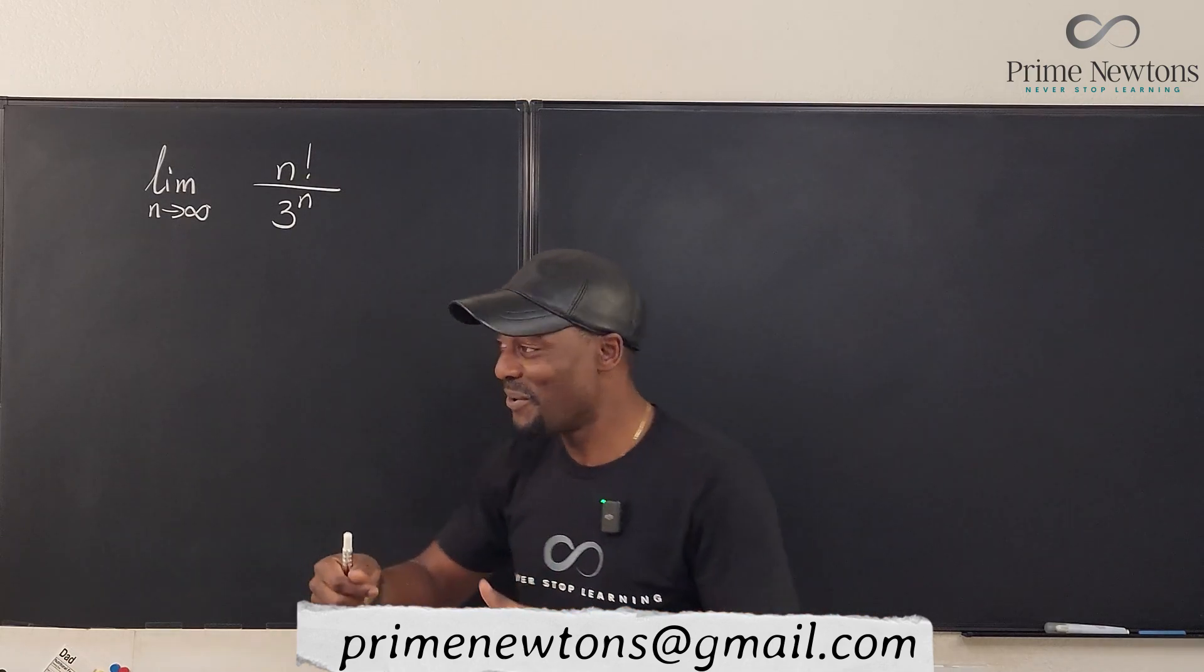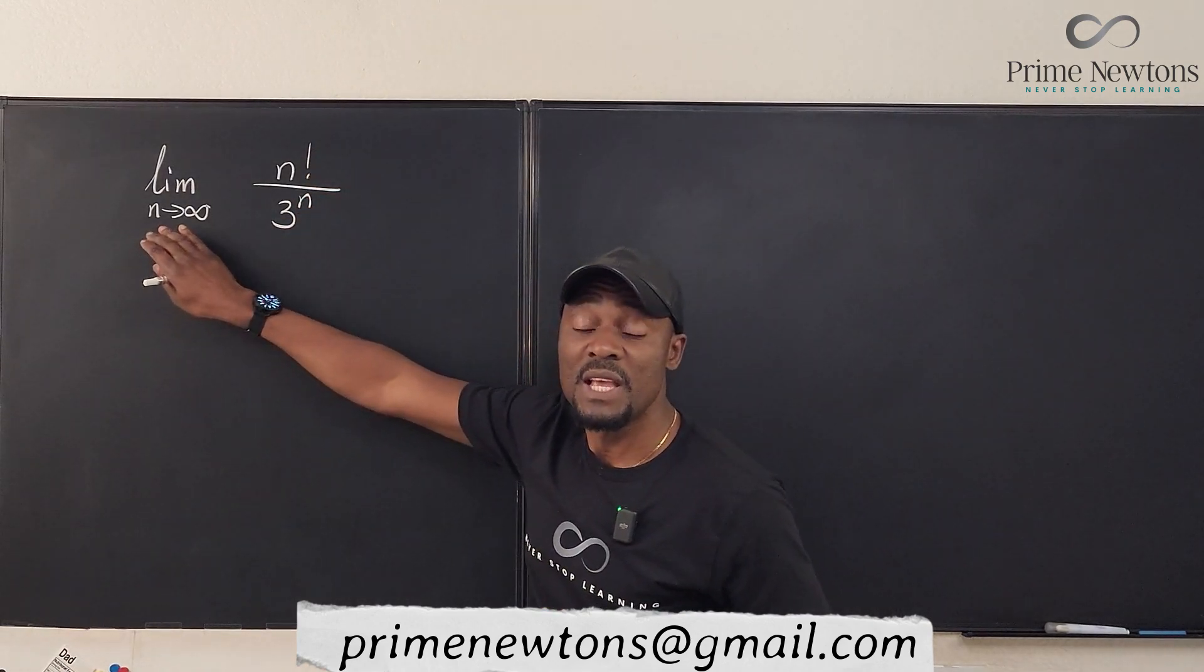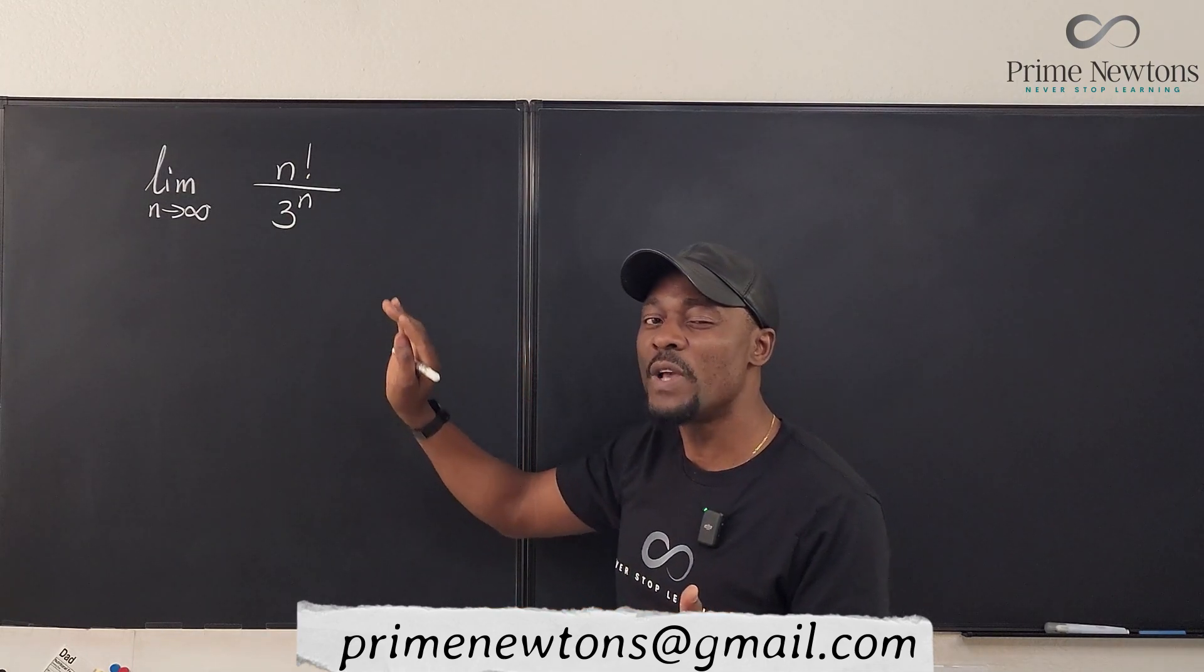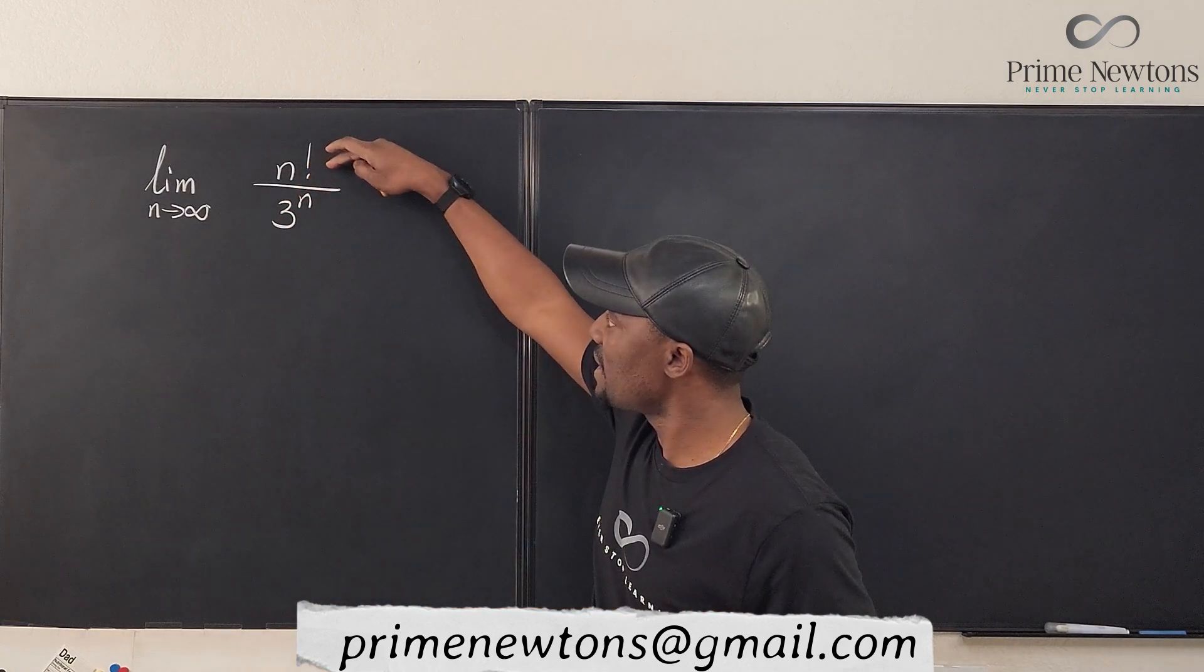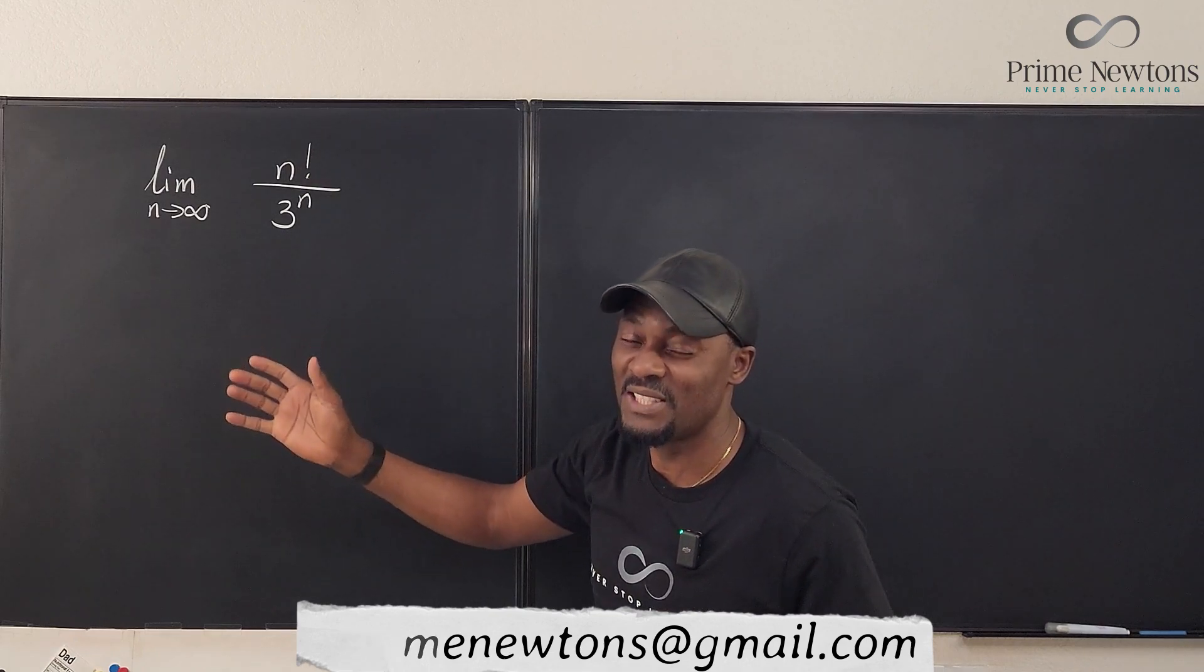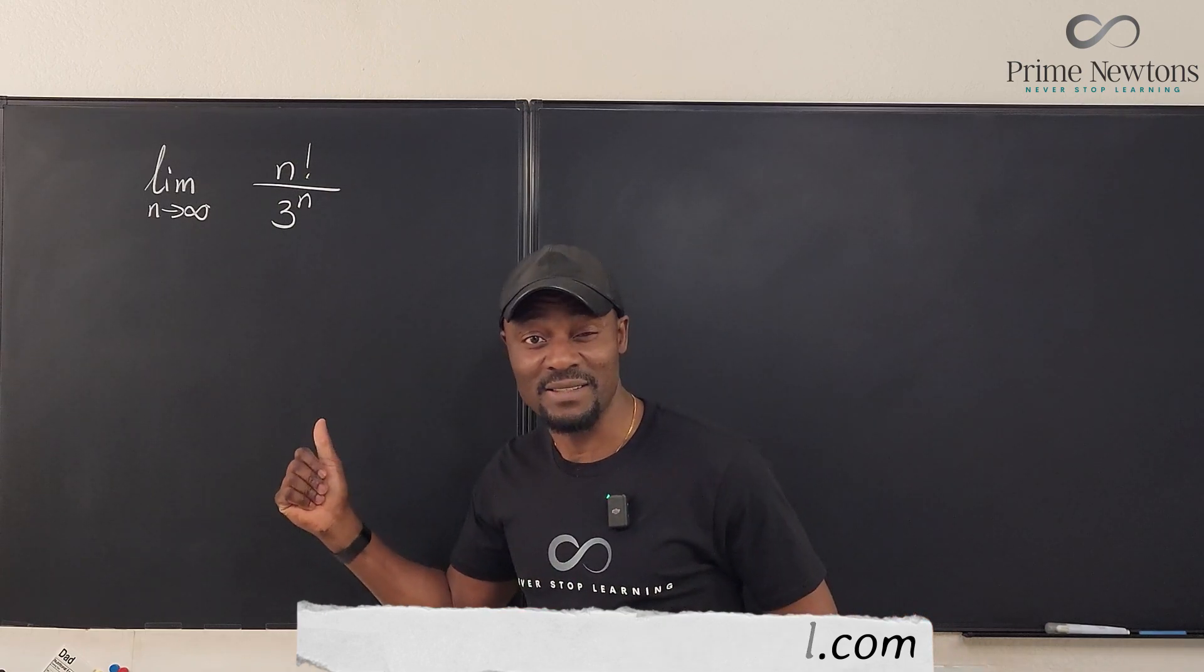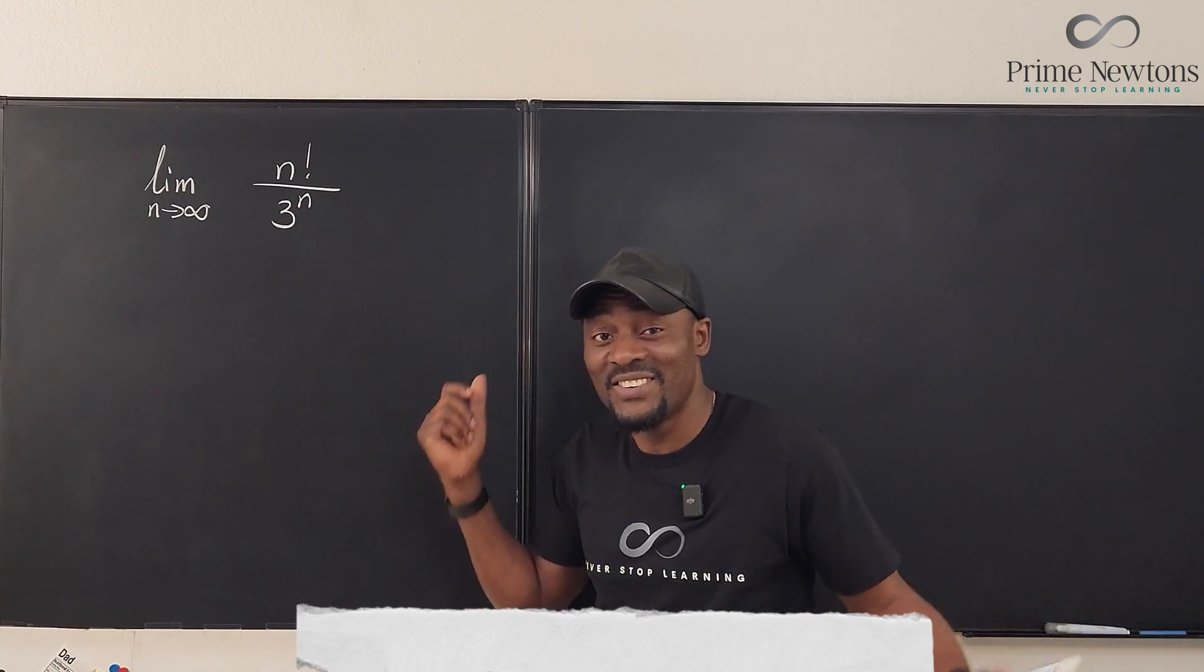So the way this is, the top is bigger than the bottom. And anytime a limit is such that the variable is approaching infinity, it always goes in the direction where there is more. So this is going to be infinity divided by something that is less than infinity. So your answer will ultimately be infinity. But because this is calculus and this is mathematics, we have to show it. How do we show it? Well, that's why I'm making this video. Let's get into it.